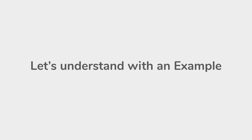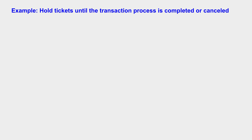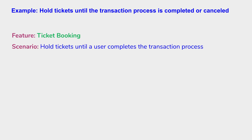Let us understand this with an example — the flight ticket booking system example we discussed in the earlier session. The system should hold or block the tickets until the transaction process is completed or cancelled. We can put this example in the feature 'ticket booking' and create a scenario that is: hold tickets until a user completes the transaction process.